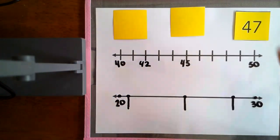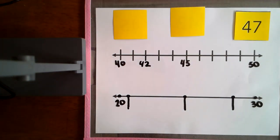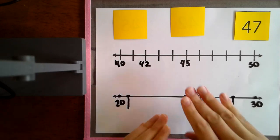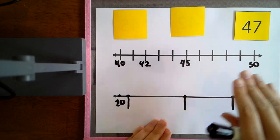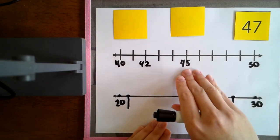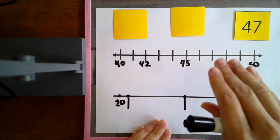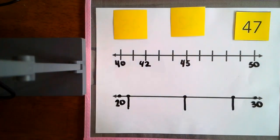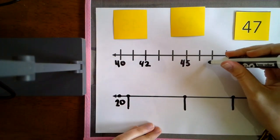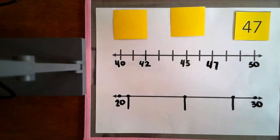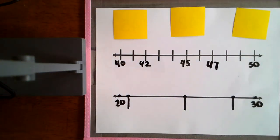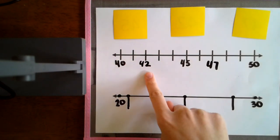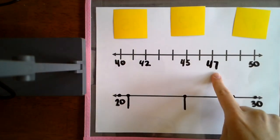Our last number to place on the number line is 47. Now 47 is greater than 45, so it should be closer to 50. Let's start at 45 and count on. 45, 46, 47. And now we've placed all three numbers on the number line. We have 42, 45, and 47.